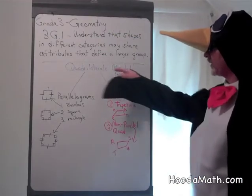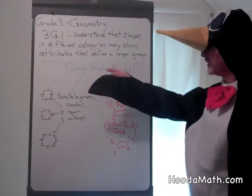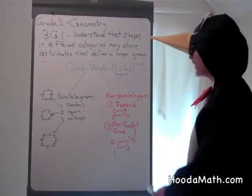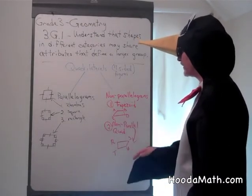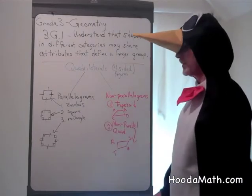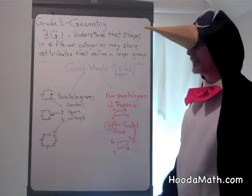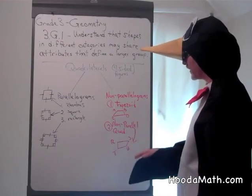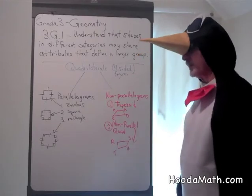Another subcategory of quadrilaterals are nonparallelograms, or nonparallel quadrilaterals. A trapezoid is an example — it can have one pair of opposite sides that are parallel, but the other pair are not parallel and do not have to be equal in length. None of the sides have to be equal in length. And then there's a plain nonparallel quadrilateral where none of the sides are parallel and none of them are equal in length.